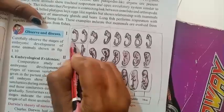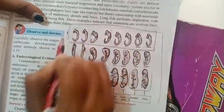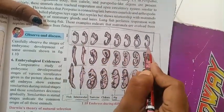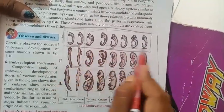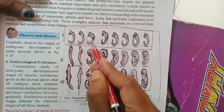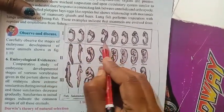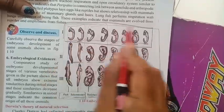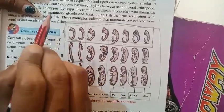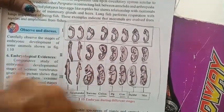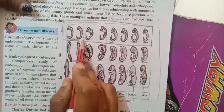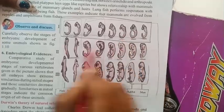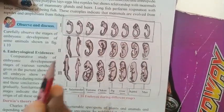Now, look horizontally at all the initial stages: fish, salamander, tortoise, chicken, pig, cow, rabbit, human. All initial embryo stages look very much identical. Embryological evidence proves that the initial stages of embryos are very much similar, meaning we all living things have a common origin.